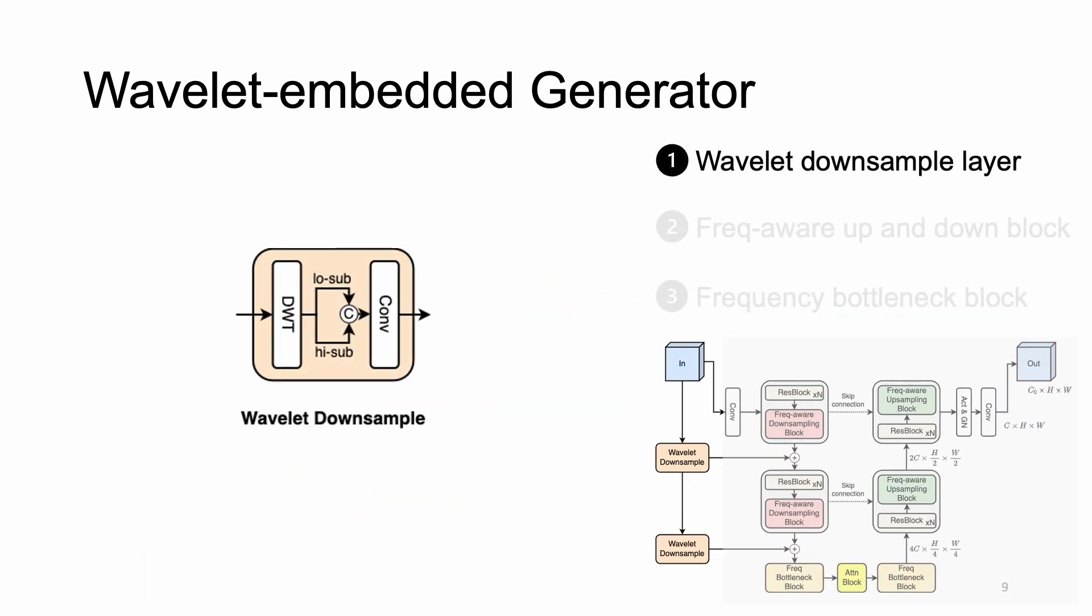The first proposed module is the wavelet downsample layer. It serves as a residual connection to inject input signals to different feature pyramids of the UNet encoder. Specifically, the input signals are first mapped to corresponding feature dimensions, then added to each feature pyramid.